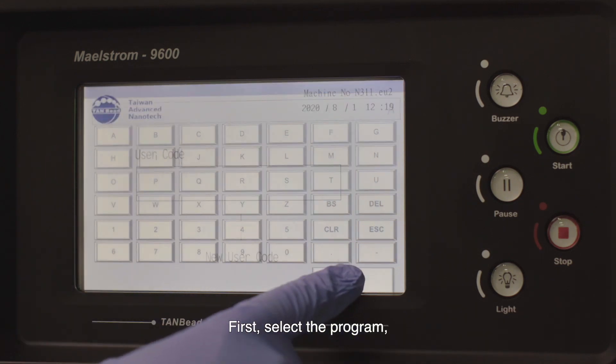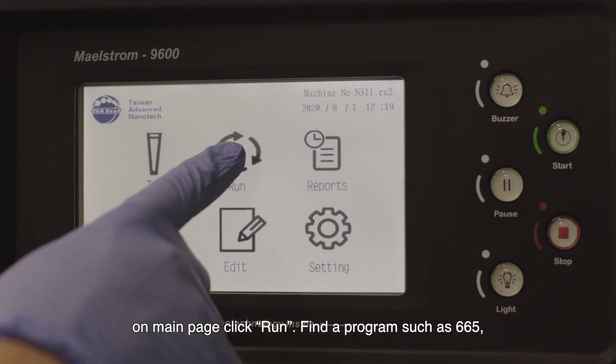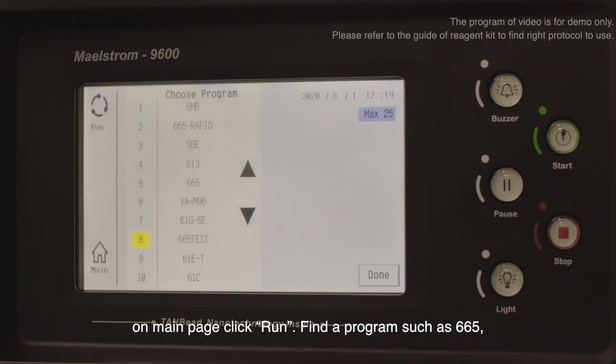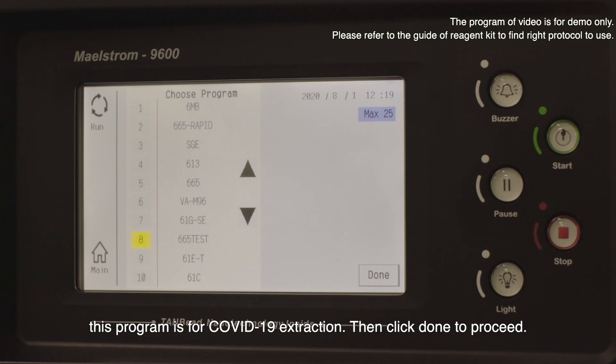First, select a program. On the main page, click run. Find a program such as 665. This program is for COVID-19 extraction. Then click done to proceed.